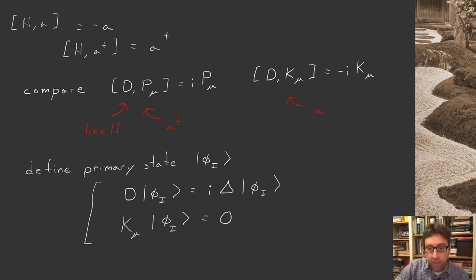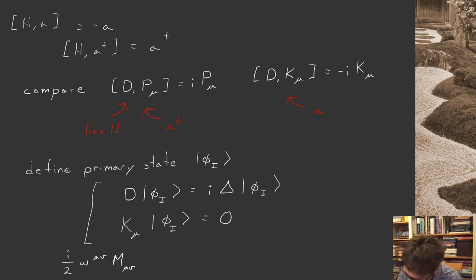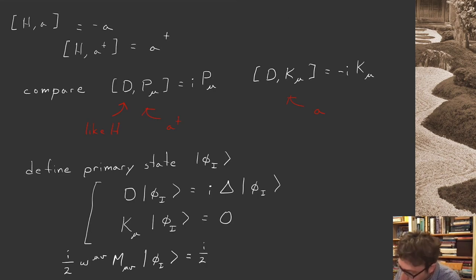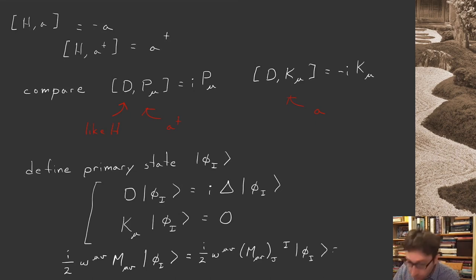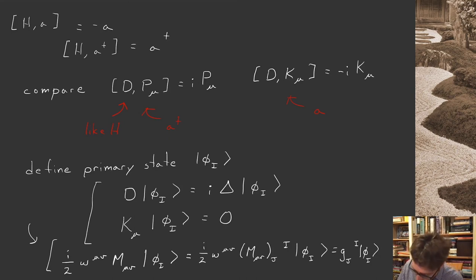I should say something about the Lorentz index as well. If it's not just a scalar state but has some representation of the Lorentz algebra, we can think about how Lorentz generators act on it too. But this part is just like with the Poincaré group — there'll be some representation of the Lorentz group under which the state transforms, given by a matrix g_ji, just as in the Poincaré group. You can also associate a Lorentz index here, just like for Poincaré.